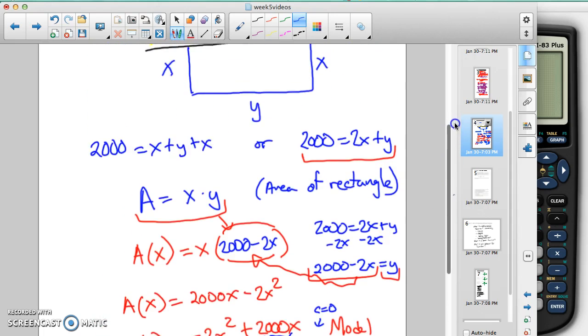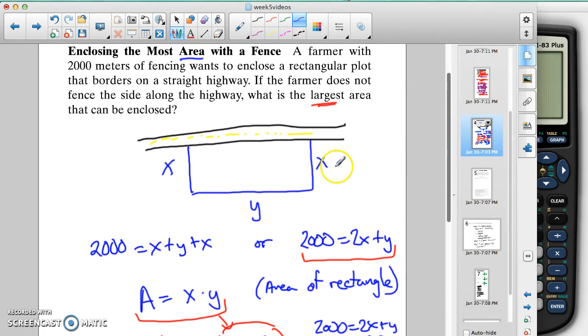And then, so that tells us the dimension here along this side of the graph. So this is 500. And then we're in meters, 500 meters. And this is 500 meters.